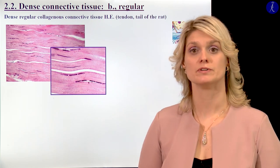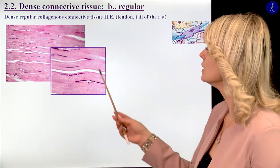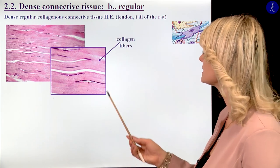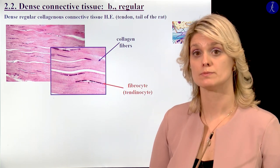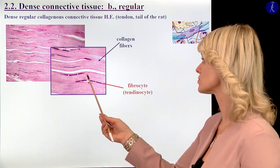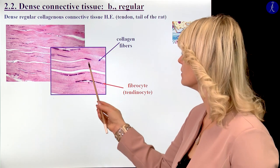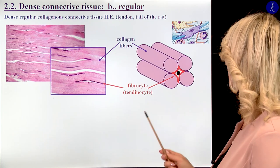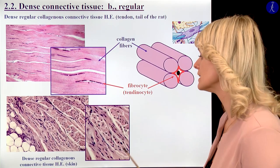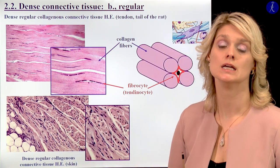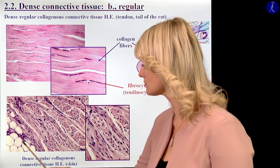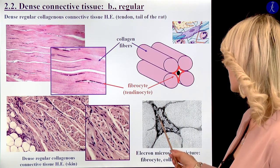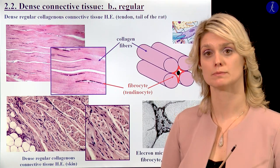The other group within the dense connective tissue is the regular connective tissue. The dense regular collagenous connective tissue is visible from the tendon or the tail of the rat. Here you can see the collagen fibers, and between them we can find tendocytes — also called tenocytes or fibrocytes in the tendon — which are elongated cells with sharp ends and wing-like processes located between the collagen fibers. We can find this dense regular collagenous connective tissue in the lowest part of the skin in the subcutis, where between the fatty tissue they form septa.